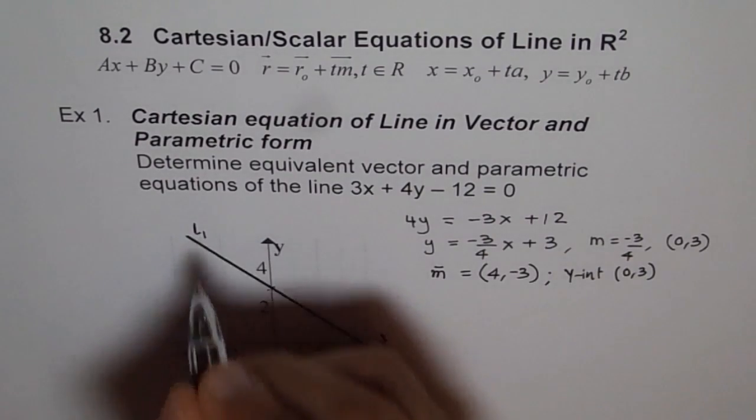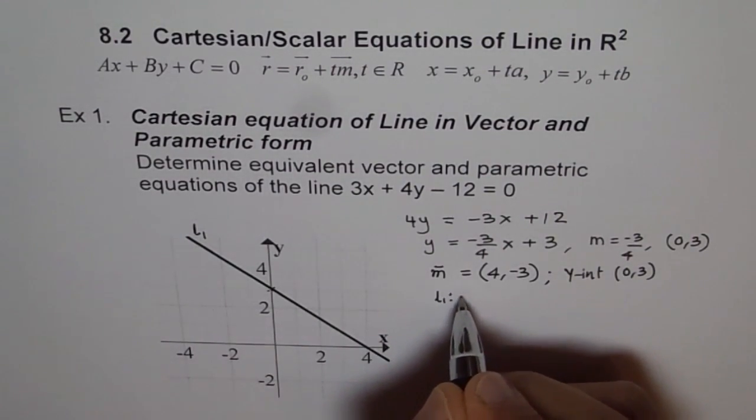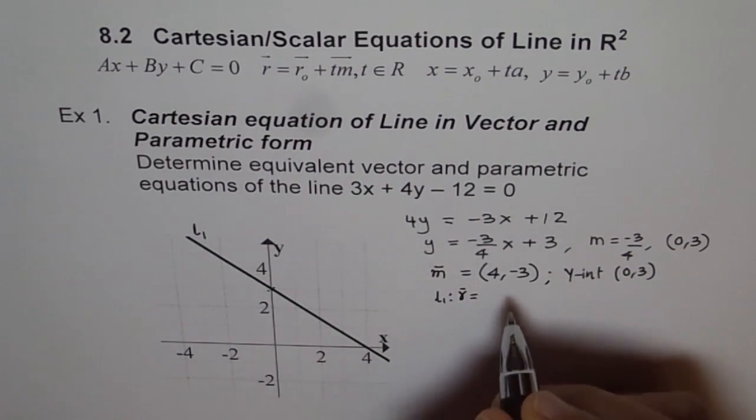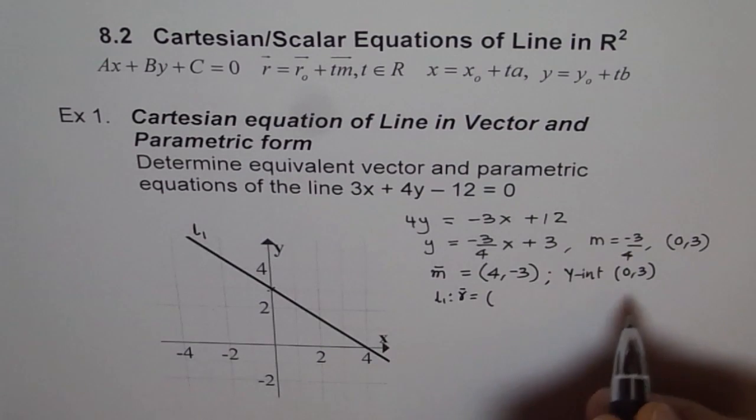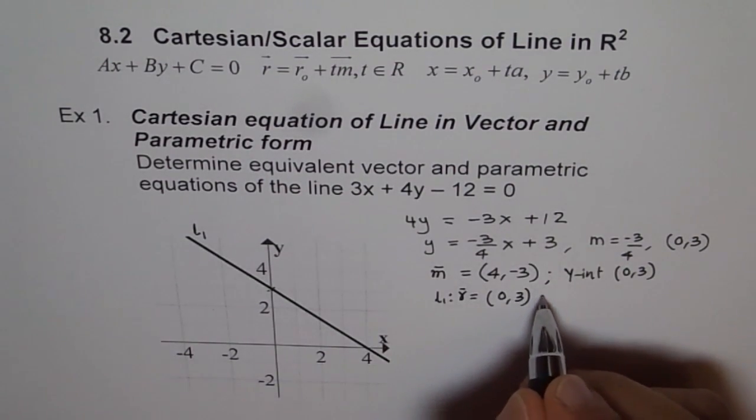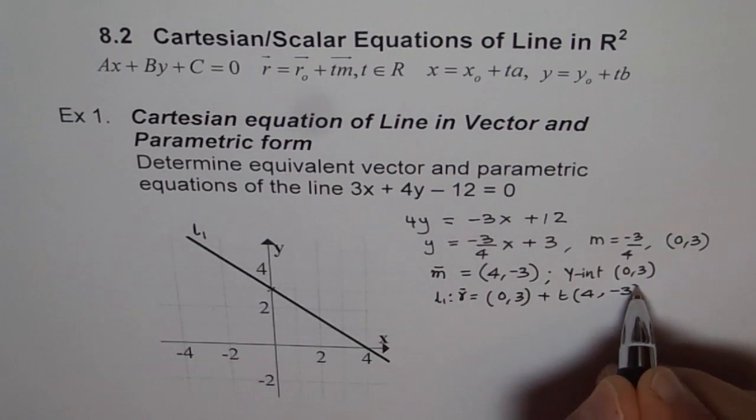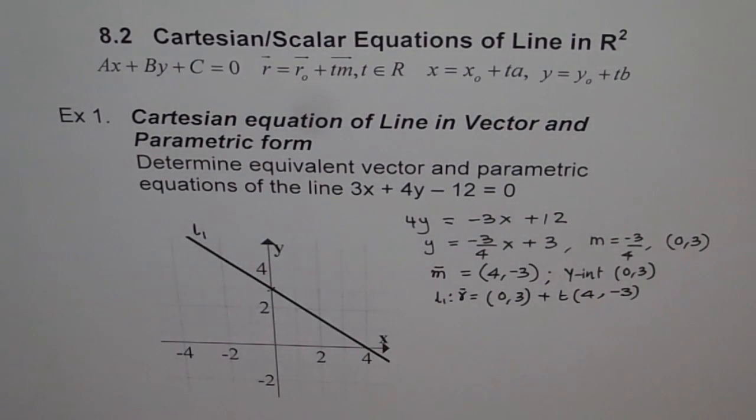And now we can write the equation of this line. Let's say the line is L1. We say L1 line equation is R equals to the point 0, 3 plus T times 4 minus 3. So that becomes our equation in vector form.